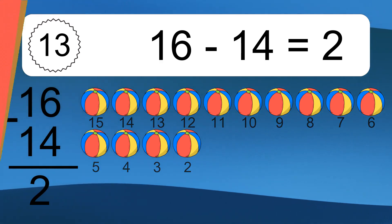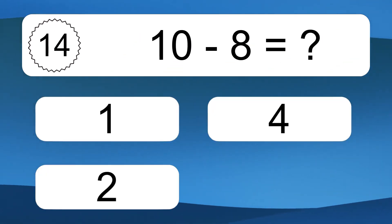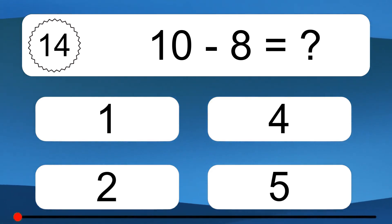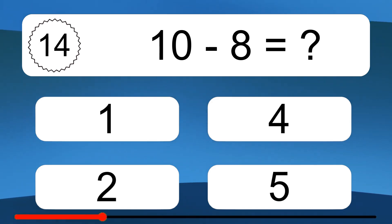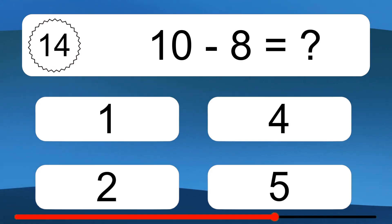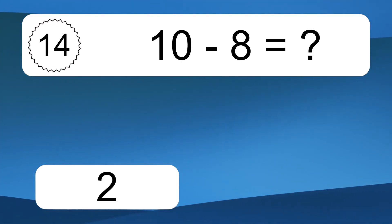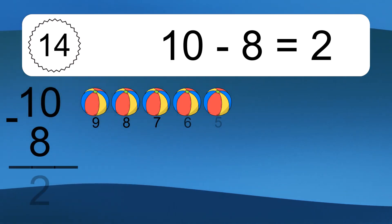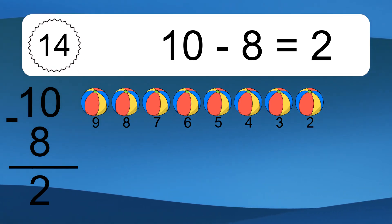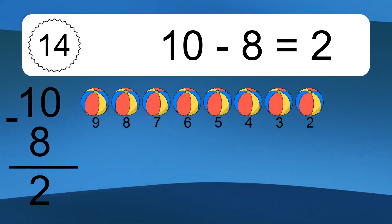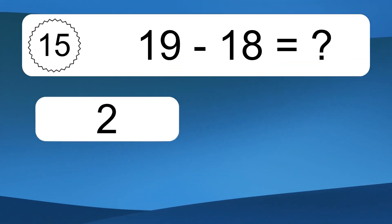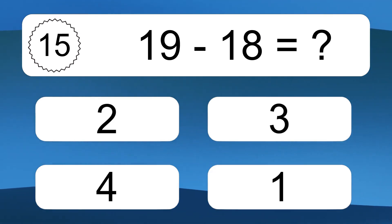10 minus 8 equals what? 10 minus 8 equals 2. Let's count it: 9, 8, 7, 6, 5, 4, 3, 2.